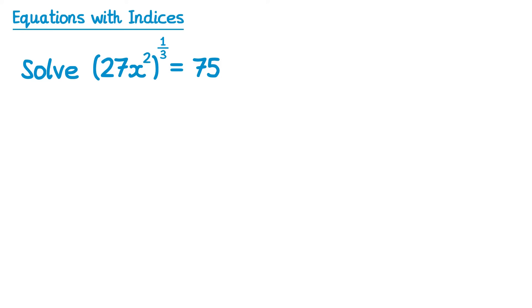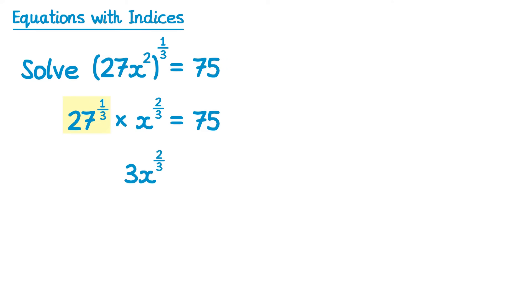So remember we raise the 27 to the power one third, and for the x squared we multiply the powers: 2 times one third is two thirds, so we have x to the power two thirds, and this equals 75. Now, 27 to the power one third just means the cube root of 27, which is 3, so we can replace this with a 3. So we have 3x to the power two thirds equals 75.